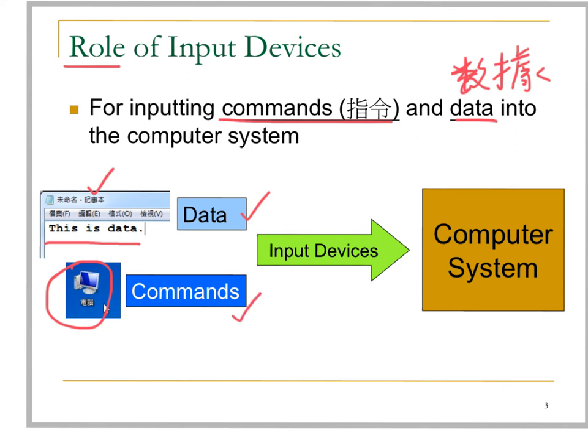All this data and commands are input through input devices, such as the keyboard or the mouse, into the computer system for further processing. The data will be processed by the CPU through the instructions of a computer program.